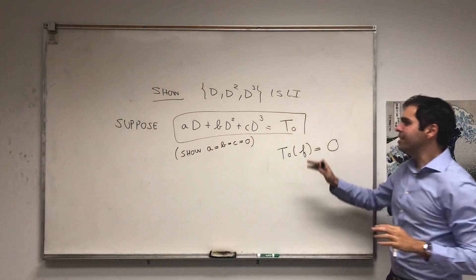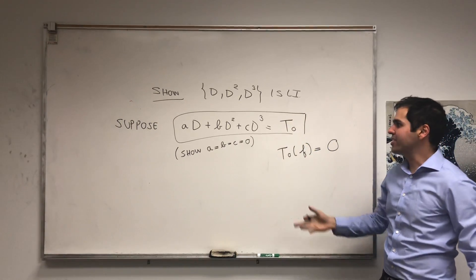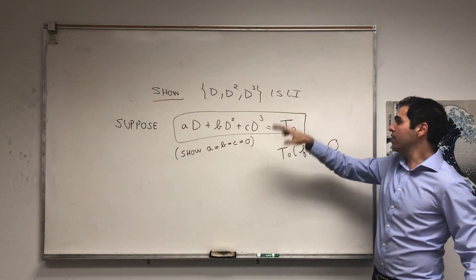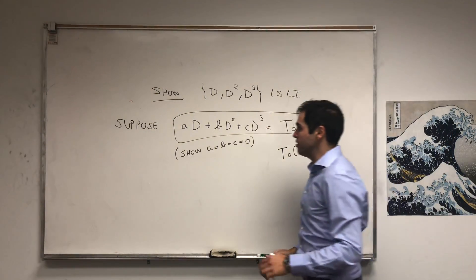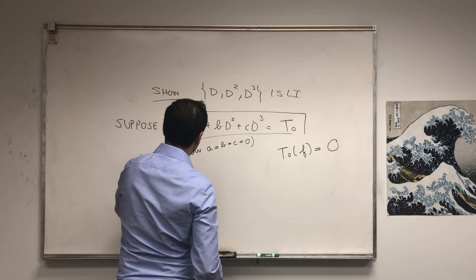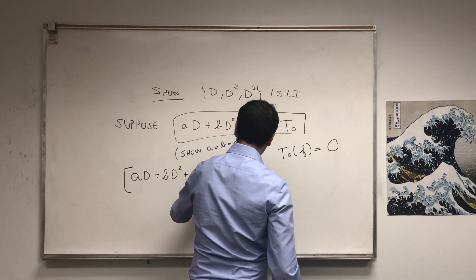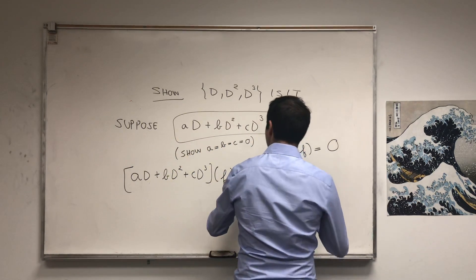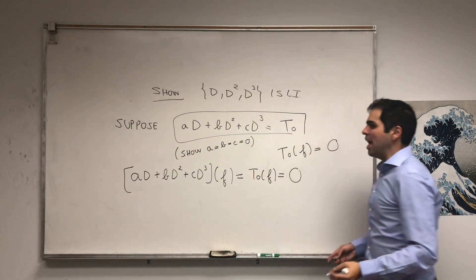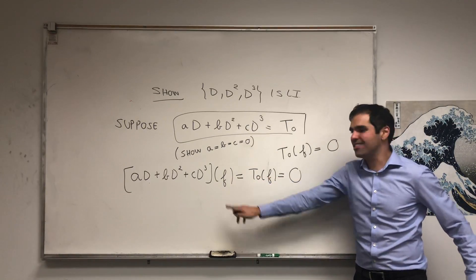But you have to understand this is an equality of linear transformations. In particular, for every input f, it always gives you the same output. So what this tells you is that aD + bD² + cD³ of f equals T₀ of f, which is zero. And so this works for any function, so any smooth function.